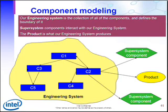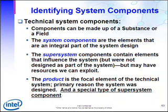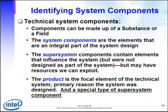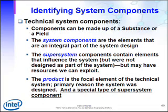Here we've placed a boundary around our engineering system to describe all those elements that fall within the system itself. Before we go any further, we need to have some definitions. A component is either a substance or a field, and they are elements that are an integral part of the system's design. A super system component contains elements that influence the system but were not designed as part of the system, but does have some resources that we can exploit. And the product is the focal element of the technical system itself, the main reason why the system was designed, and is actually a special type of super system element.